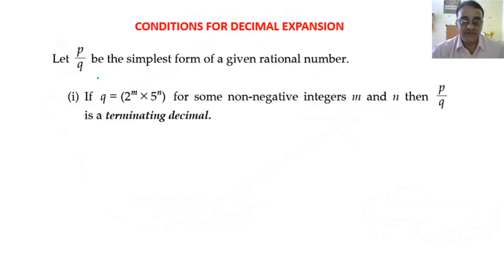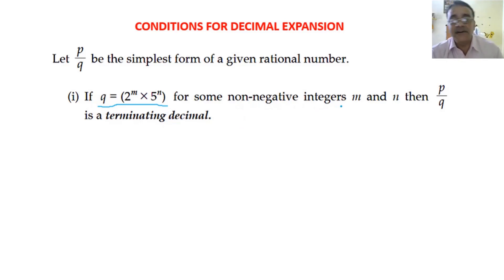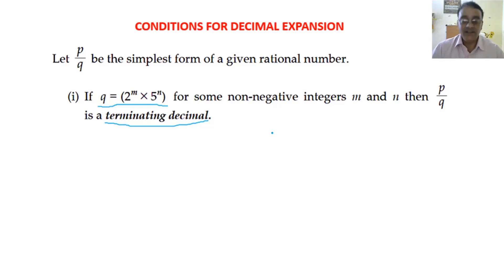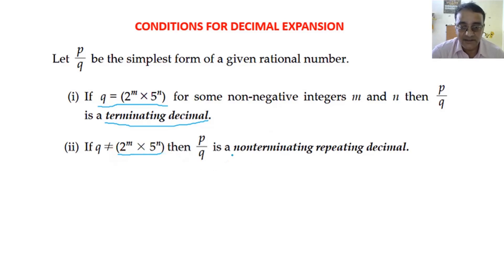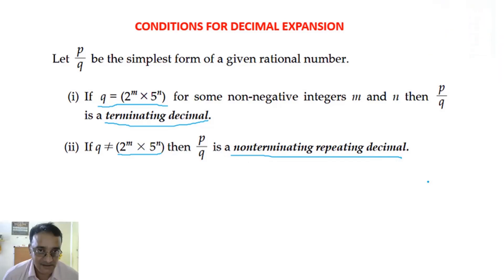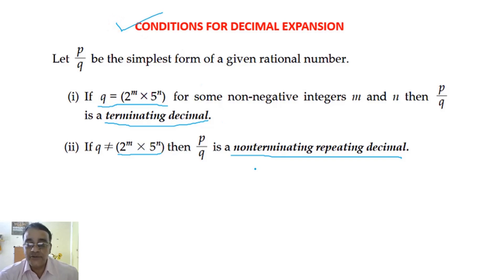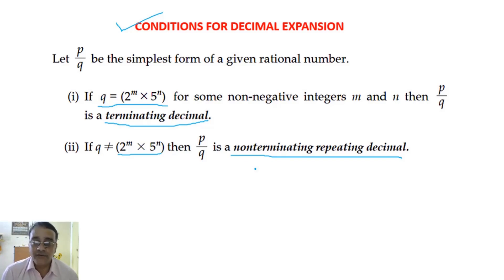Conditions for decimal expansion: First, if q is in the form of 2^m × 5^n for some non-negative integers m and n — non-negative integers are whole numbers — then p/q has a terminating decimal expansion. If q is not in the form of 2^m × 5^n, then p/q is a non-terminating repeating decimal. This covers the first type of question that appears in exams: write the condition for which the rational number p/q has terminating decimal expansion, or non-terminating repeating decimal expansion.